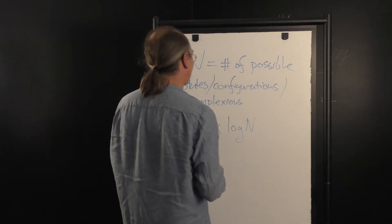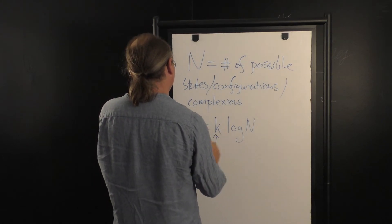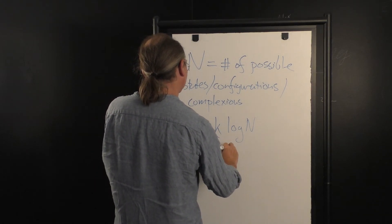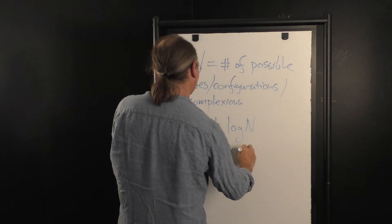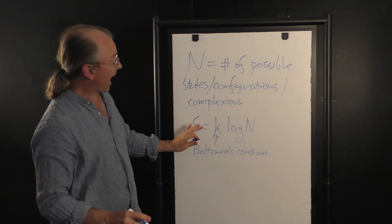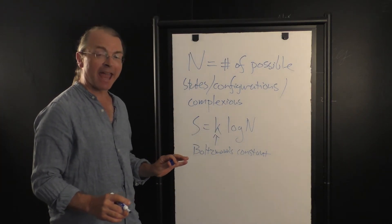which is now called Boltzmann's constant. If they defined this S to be K log N,